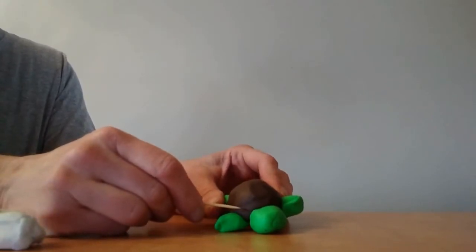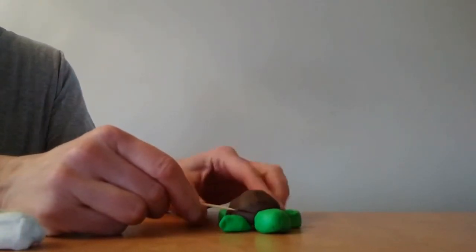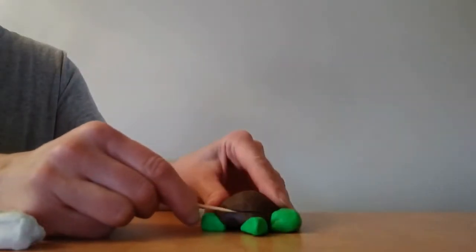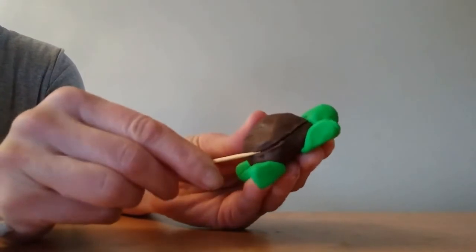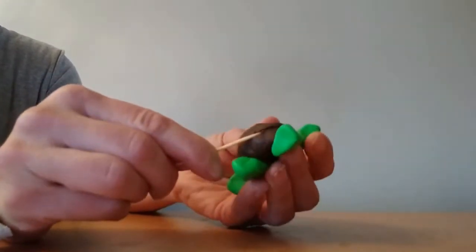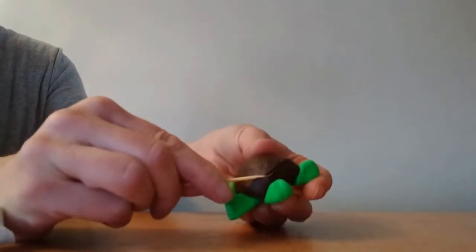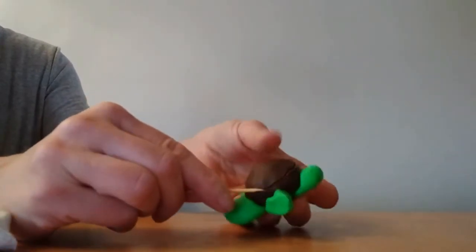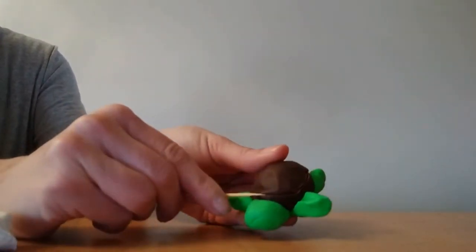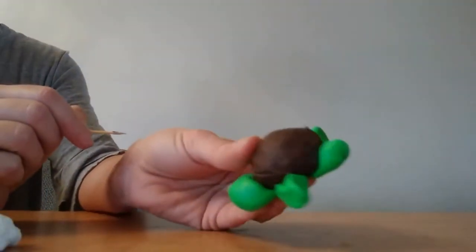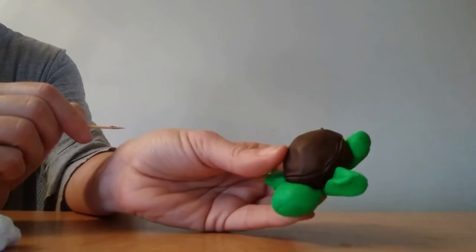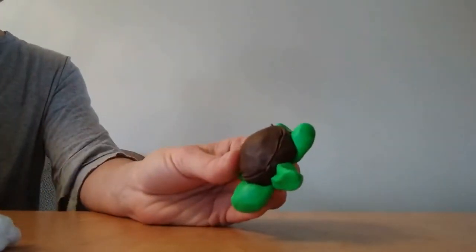I don't know if you can kind of see, but I'm just going to drag it through the clay. So I'm going to make a circle and go all the way around the turtle shell. I know it's kind of hard to see, but you're just going to go around the turtle shell.